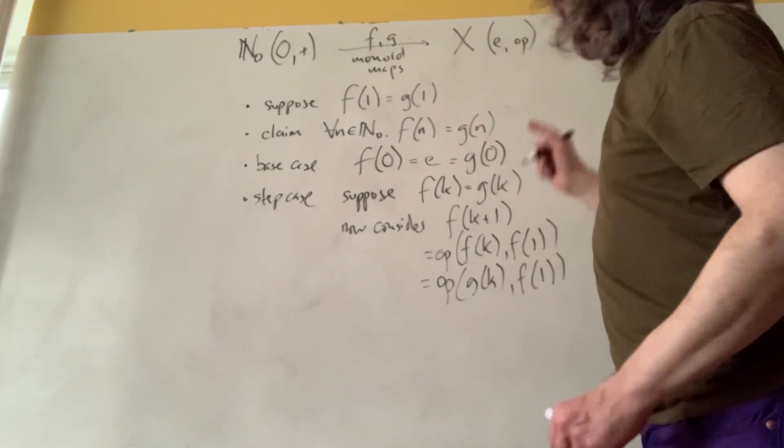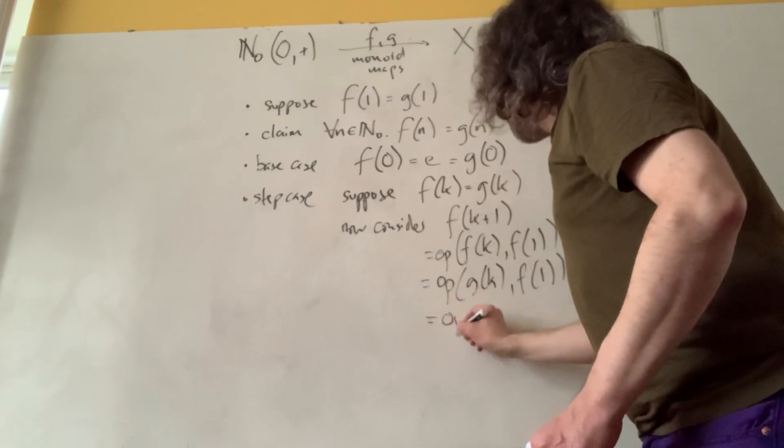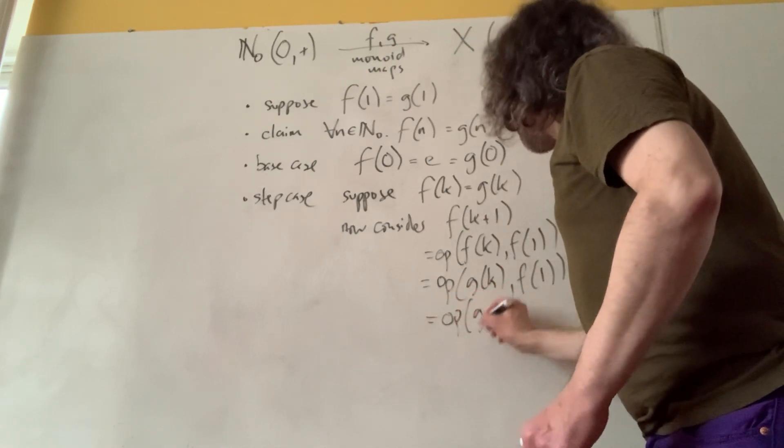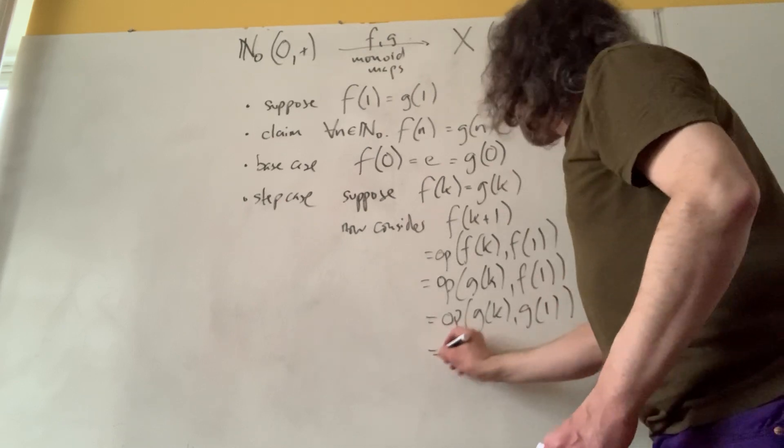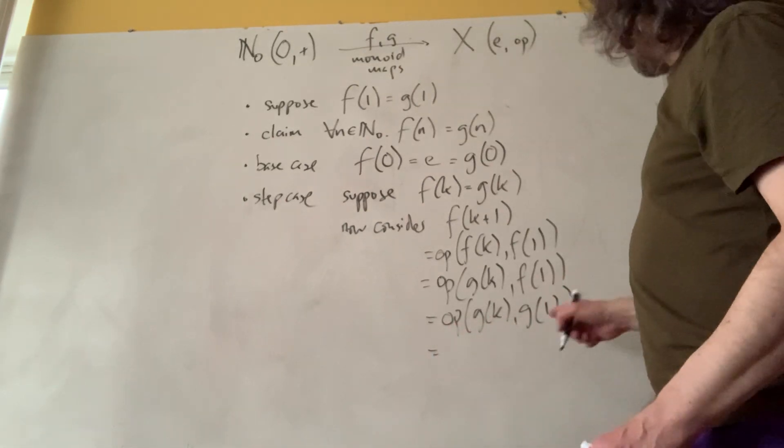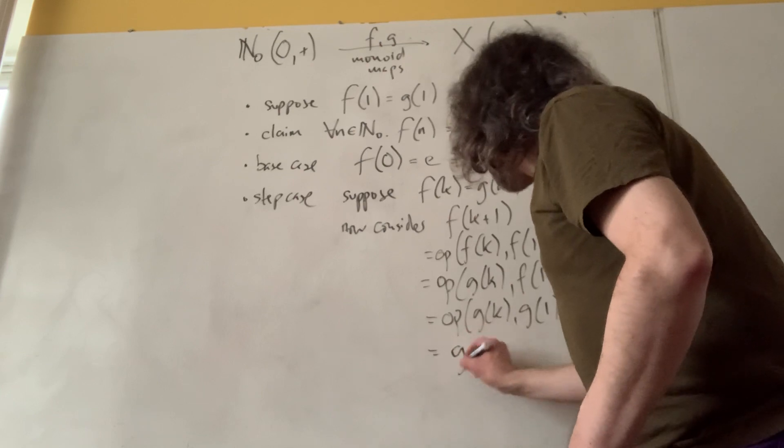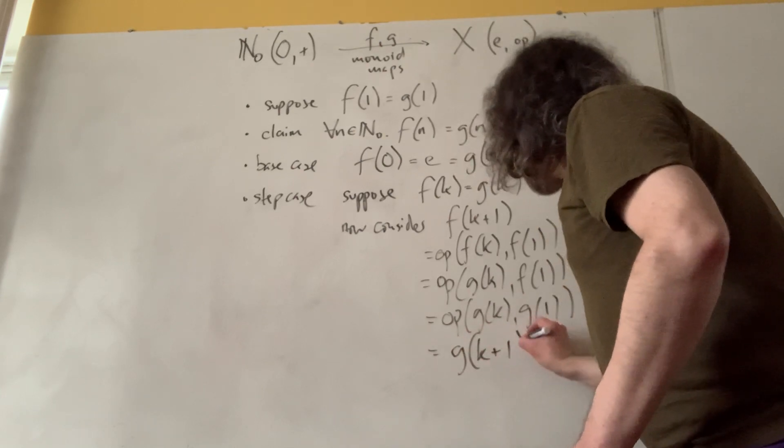But by our supposition that f and g agree at 1, that's op of g of k and g of 1. And because g is a monoid map, that's equal to g of k plus 1.